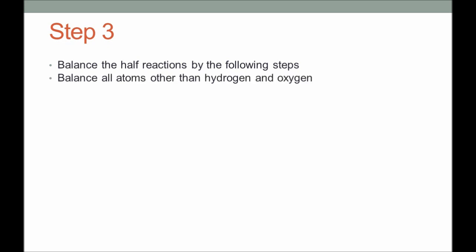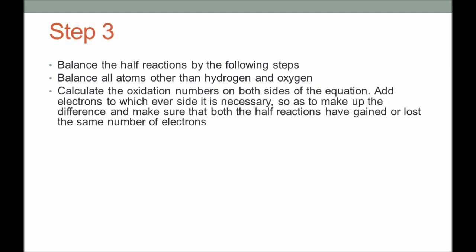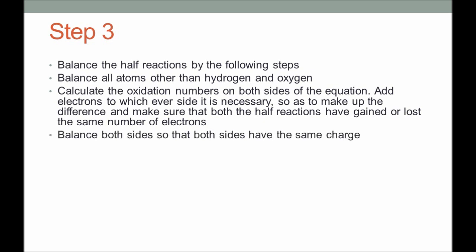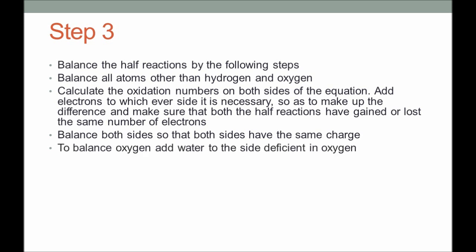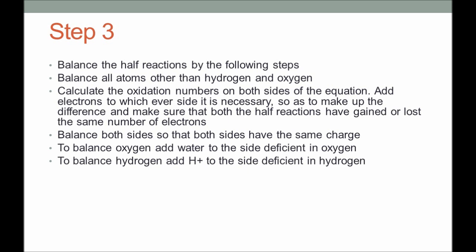To balance the half-reactions: balance all atoms other than hydrogen and oxygen, then calculate the oxidation numbers on both sides. Add electrons to whichever side is necessary to make up the difference. To balance oxygen atoms, add water molecules on the side deficient in oxygen. On the side deficient in hydrogen, add H⁺ ions, since the reaction is balanced in an acidic medium.